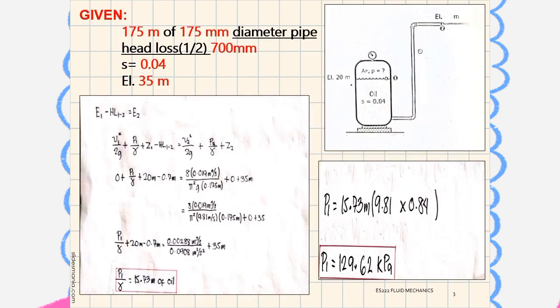Given: 175 meters of 175 millimeter diameter pipe, head loss 1-2 is 700 millimeters. S equals 0.04, EL is equal to 35 meters.